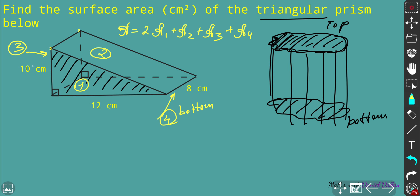For face number one, A1 is a right-angled triangle with legs 10 and 12. Area of a triangle is half base times height — and remember, a triangle is half a rectangle, which is why we use that formula. So A1 = ½ × 12 × 10. Simplifying: the 2 cancels with 12 to give 6, so A1 = 6 × 10 = 60 cm².